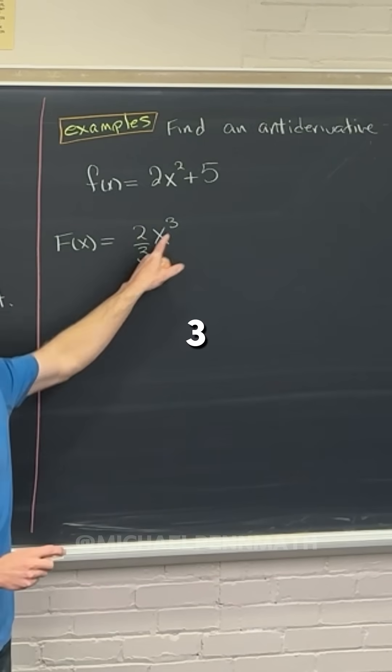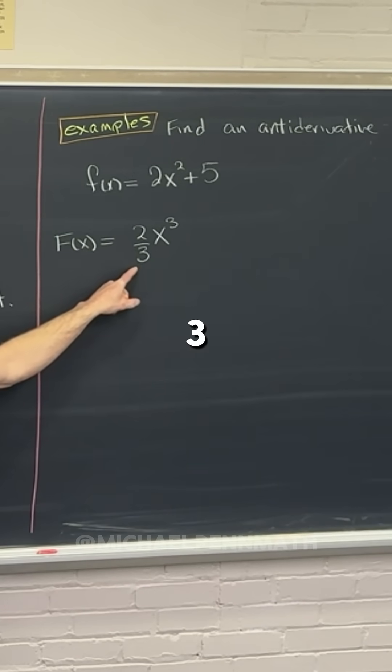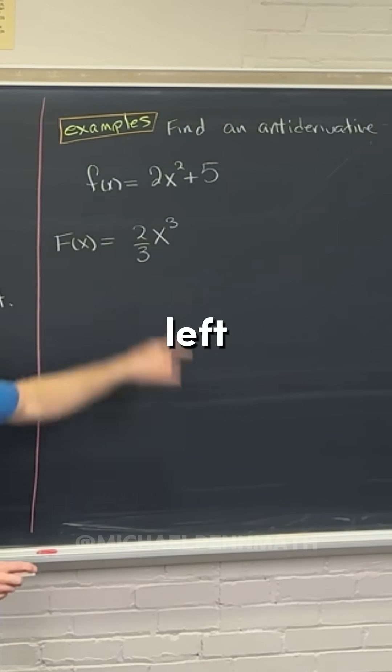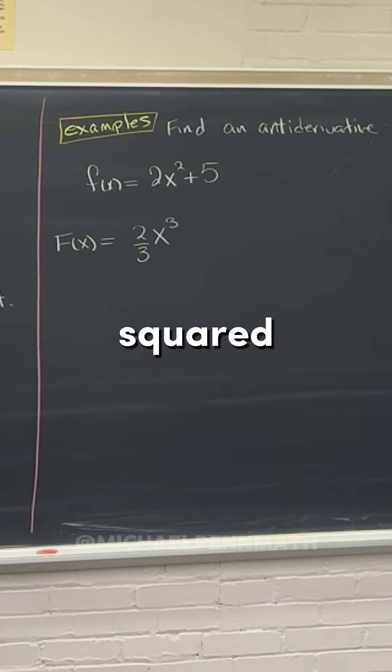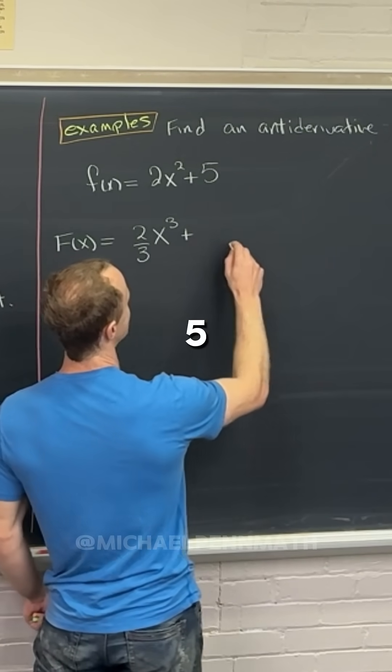Take the derivative of that, the three is going to come down, cancel this three in the denominator, and we're going to be left with two times x squared. And then, well, look at this, we have a five here.